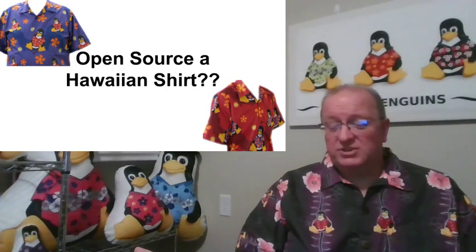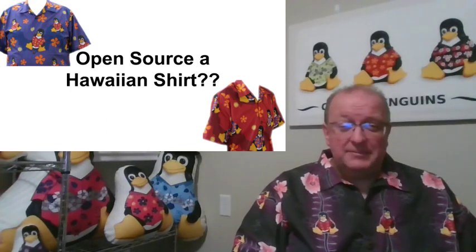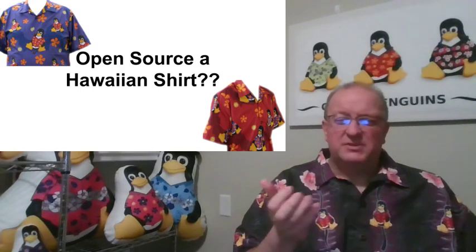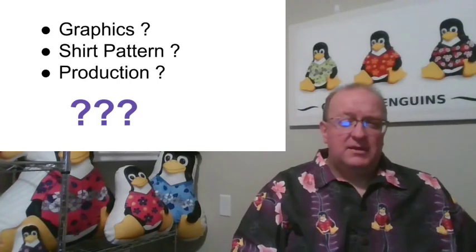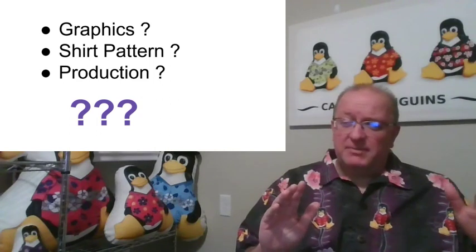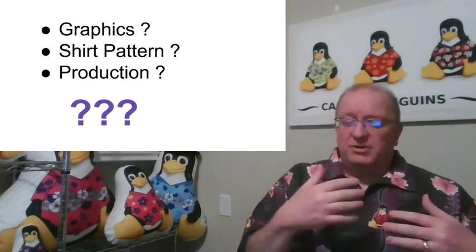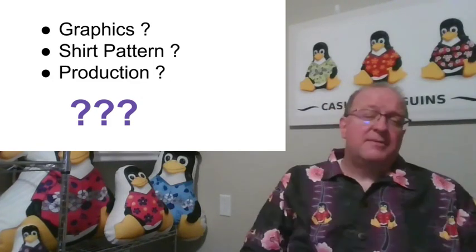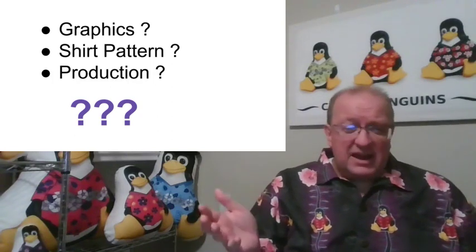My search for the ultimate Hawaiian shirt is several years old. Several years ago, when I first started towards my ultimate Hawaiian shirt dream, I tried to figure out what open sourcing the shirt would mean. It's a physical product — how do you open source it? After some thinking, I decided there were three main ways I could open source it. First is graphics. Second, I could open source the shirt pattern — not the graphics on the fabric, but the pattern that determines where you cut the fabric, how you put the shirt together, where the pocket goes, how the collar is sewn, how long the sleeve is. Also production — I wanted to open source the production on how you do all of these things.